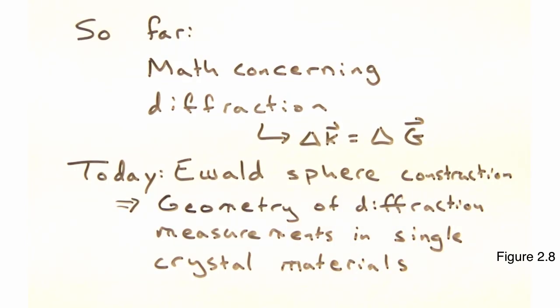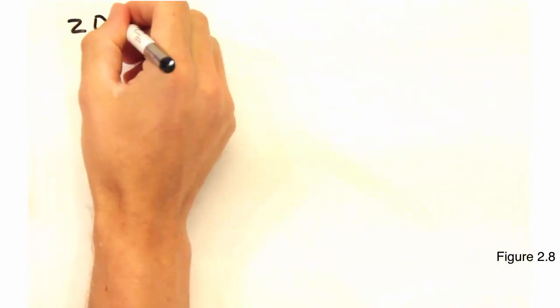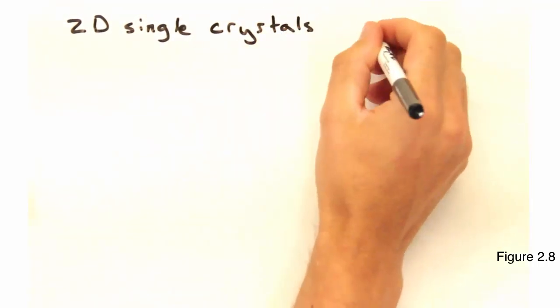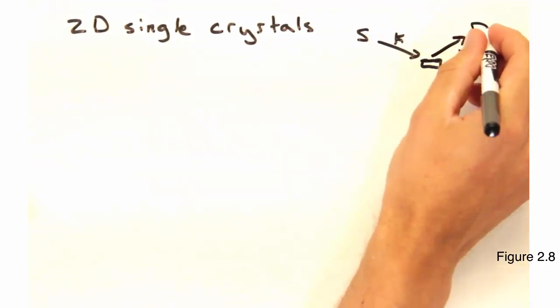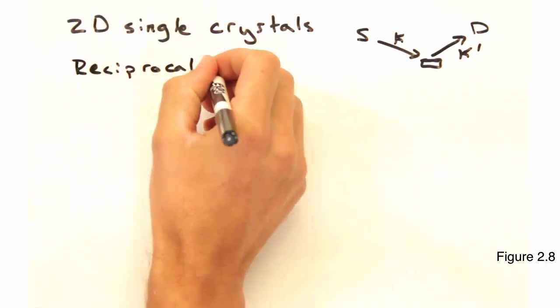To save all of you from our poor 3D drawing skills, we'll be sticking with 2D, but the premise still holds. Let's start by imagining a single crystal in 2D with the following reciprocal lattice.